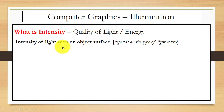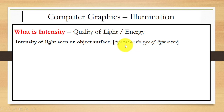The next question is: what is intensity? Intensity means the quality of light, or you can say energy. The intensity of light seen on an object surface depends on the type of light source — that is, the quality of light you see on the object surface depends on the type of light source.